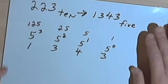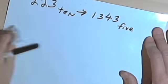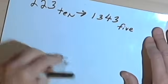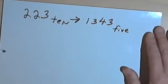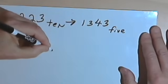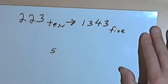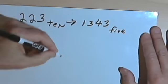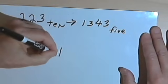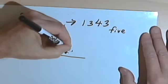While we've got this answer here, let me show you another way, and we'll check and make sure we get the same answer. The other way works like this: we take the new base, which is 5, and we divide that into 223.